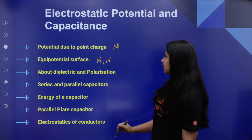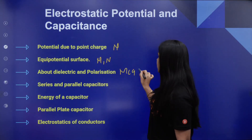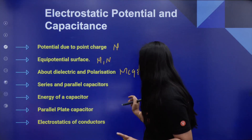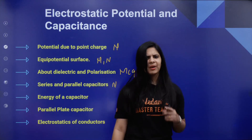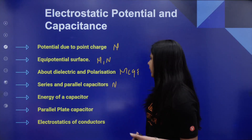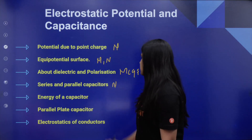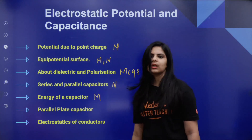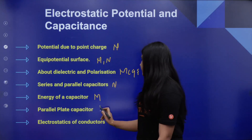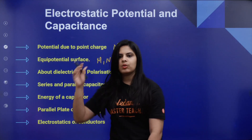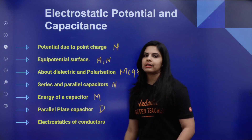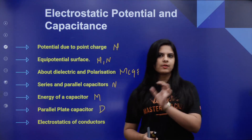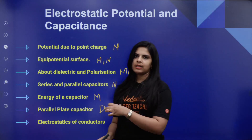Next is Dielectric and Polarization — MCQs are most likely to be asked. In series and parallel combination of capacitors, we expect numericals. Energy of a capacitor — we have to cover that. MCQs are expected there. Parallel plate capacitor — definitely derivations. Then electrostatic conductors. These topics carry 4 to 6 marks.